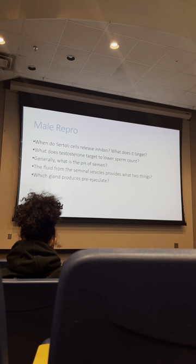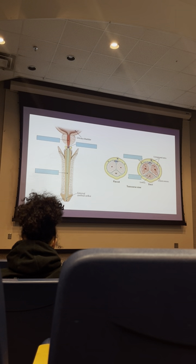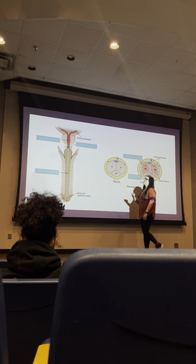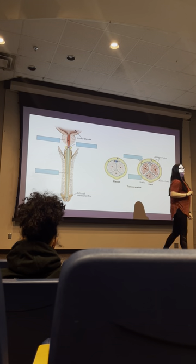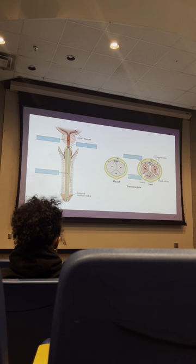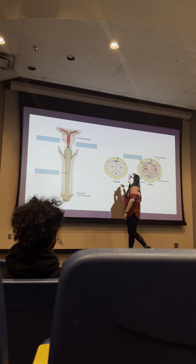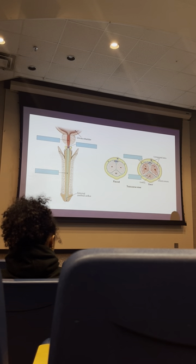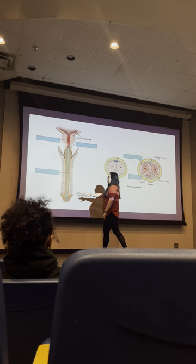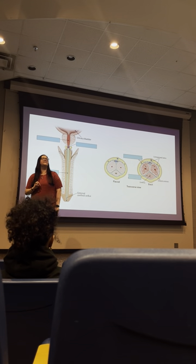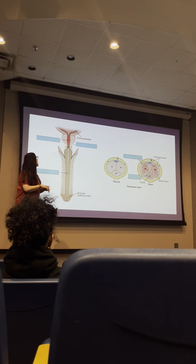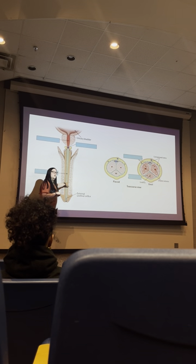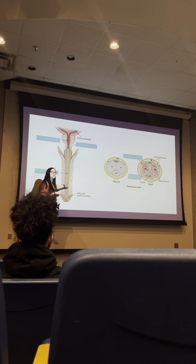The bulbourethral gland produces pre-ejaculate. The three regions of the urethra are: prostatic urethra (through the prostate), membranous urethra (the tiny region above the bulbourethral glands), and spongy urethra — the bulk of the urethra named after the corpus spongiosum erectile tissue it passes through. The two major erectile bodies are the corpus cavernosum, which undergo significant vasodilation. The corpus spongiosum keeps the urethra open.